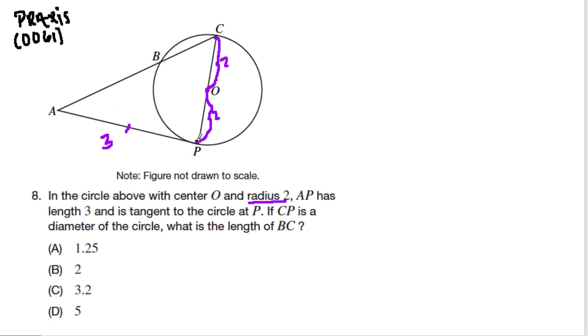So this tangent line meets the circle at P. And since it hits the diameter right there, CP, it says it's a diameter of the circle. This is a right angle. And triangle APC is a right triangle.